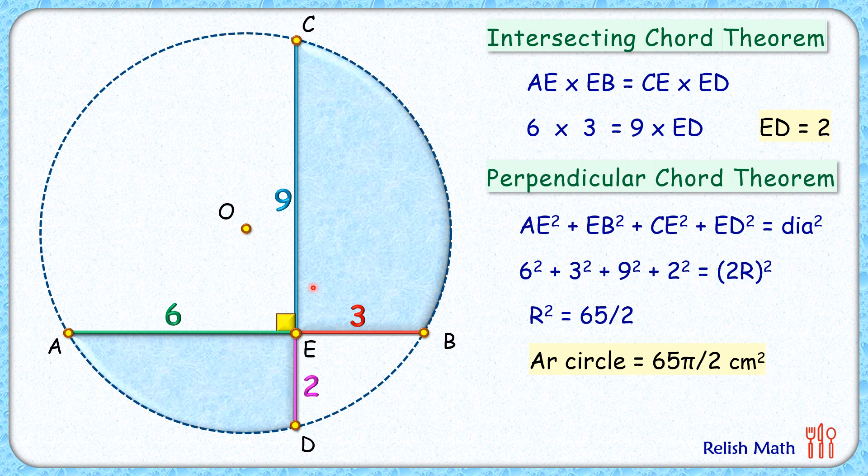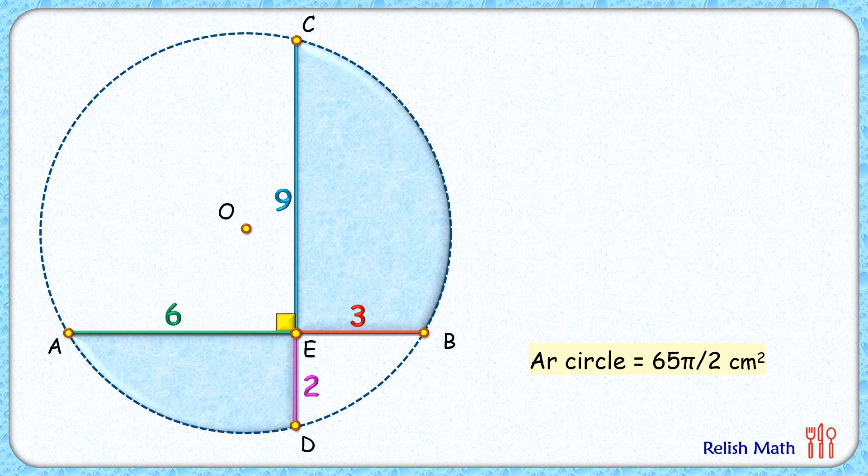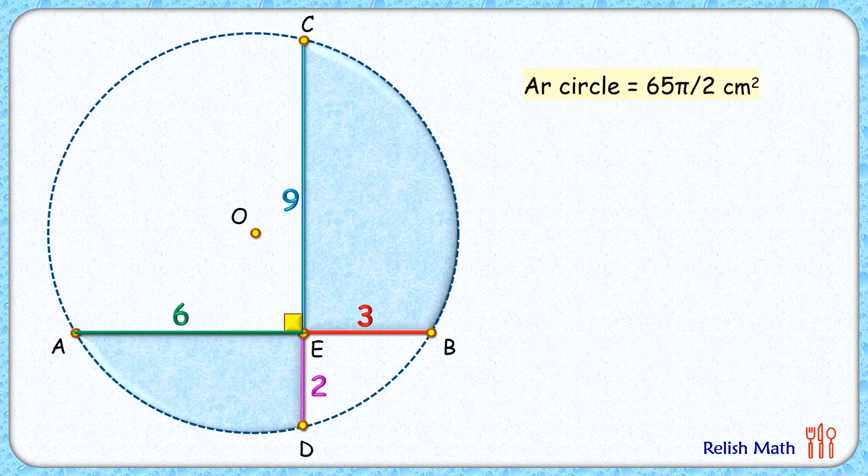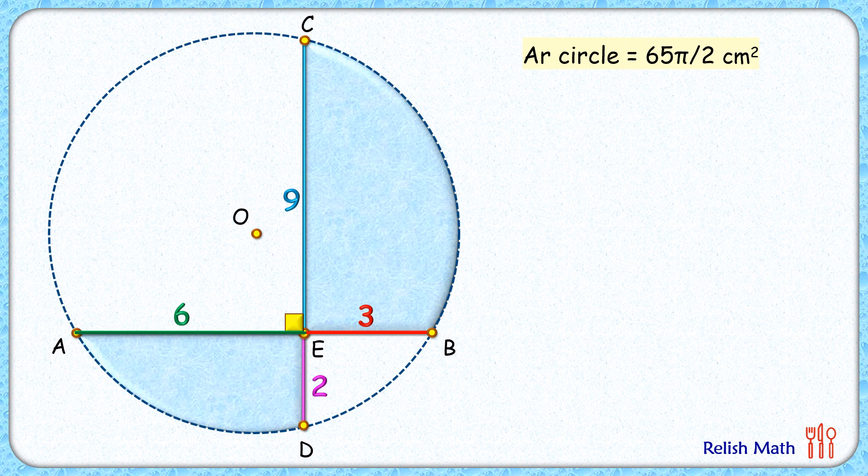Now let's find the area of this blue shaded region. We can divide the circle into two areas: the white region and the blue region. So here we can say that white plus blue area is 65π/2. Now let's draw a vertical diameter here.